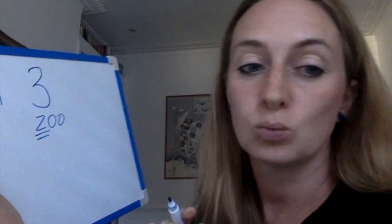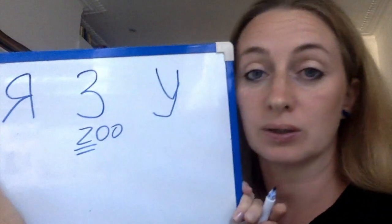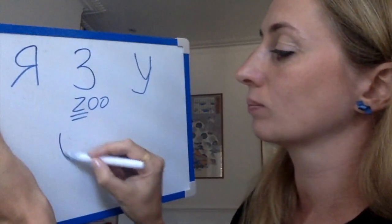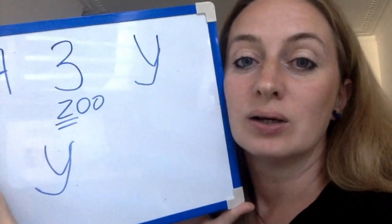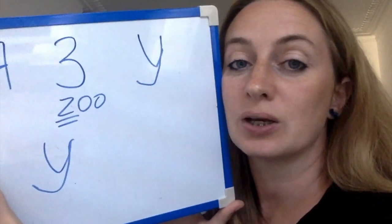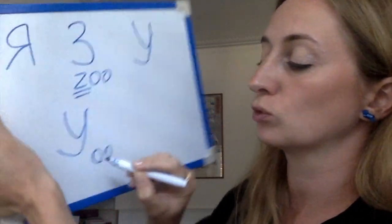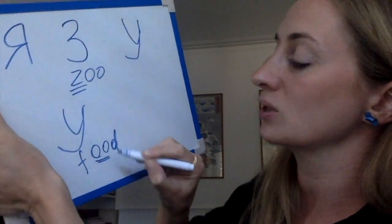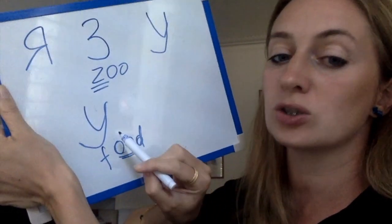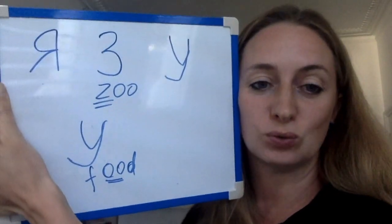And then we have one more letter: У. You write it like the English letter Y, but you pronounce it like 'oo' — У. For example, ФУД. So this is У — 3 new letters for you.